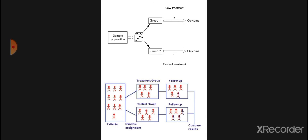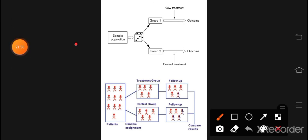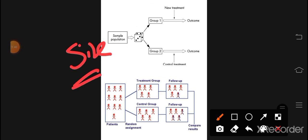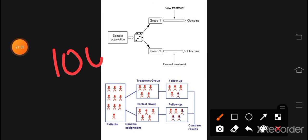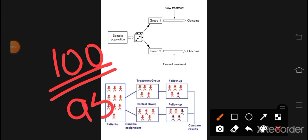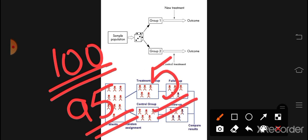Another sampling error is improper sample size — if the sample size is too small, results are unreliable, so the sampling size should be increased. Another error is incomplete coverage: for example, you had to take 100 samples but only 95 cooperated and 5 people were lazy and didn't fill the questionnaire. This is incomplete coverage — they didn't cooperate with you.